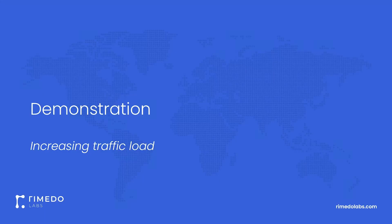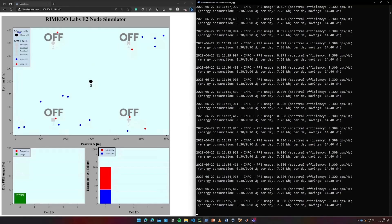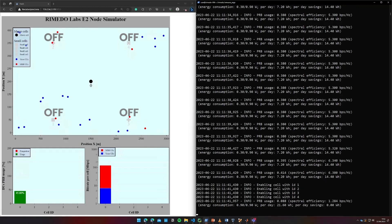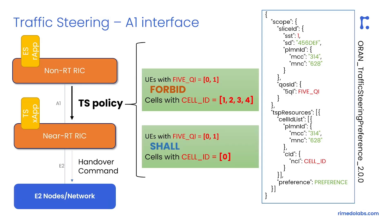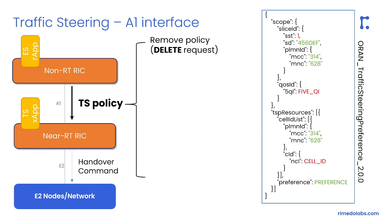Now let's move to the second scenario with an increasing number of UEs. When the observed average PRB usage is too high, the RAP takes action to enable capacity cells again. To achieve this, the RAP removes all previously created policies. By this action, all preferences set for UEs are reverted to default ones and UEs can be associated with any cell based on received power and the load balancing algorithm.